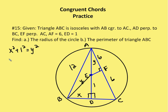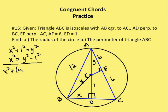I can rewrite this as X² = Y² − 1. My second triangle is triangle ABD, and that gives me X² + (Y + 1)² = 12², which equals 144.